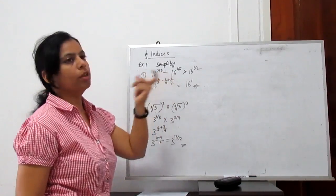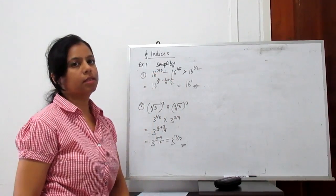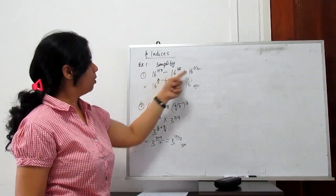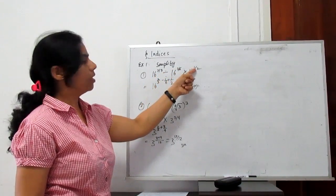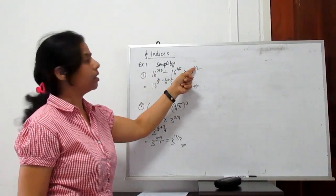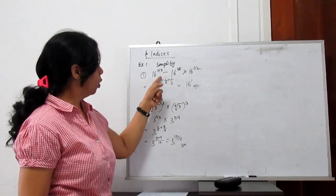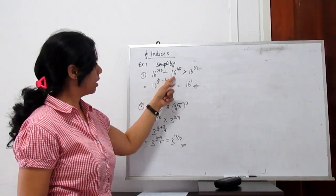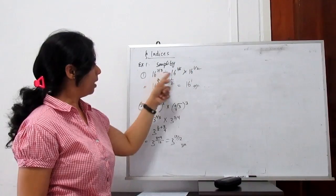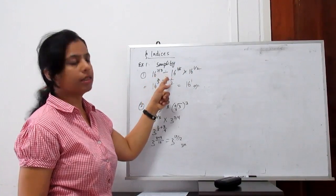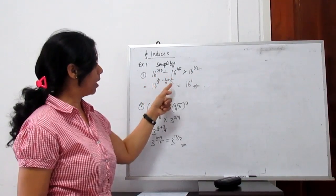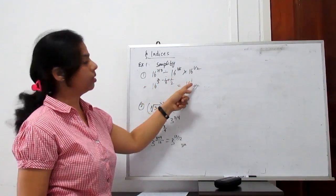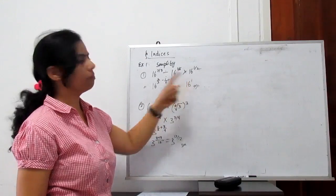Since the base is the same, in division the power is negative and in multiplication the power is positive. So we get 16 to the power 2 by 3 minus 1 by 6 plus 1 by 2. When we take LCM, this gives 16 to the power 6 by 6, which means the power is 1. So the solution is 16.